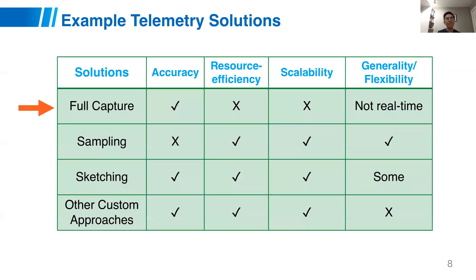Given all these requirements, we can look at some example telemetry solutions. The most natural one is to do full capture — store everything and do offline analysis. Certainly you get full accuracy, but usually it's not resource efficient and cannot scale to high volumes of traffic. Although it can handle multiple tasks together, because of the computation heaviness, usually it's not real time.